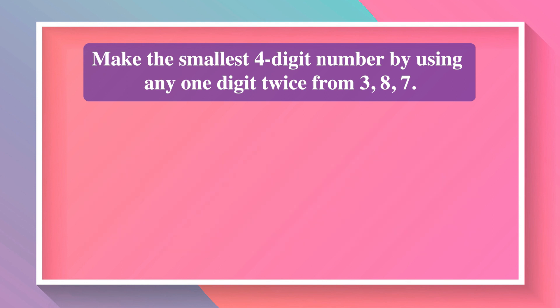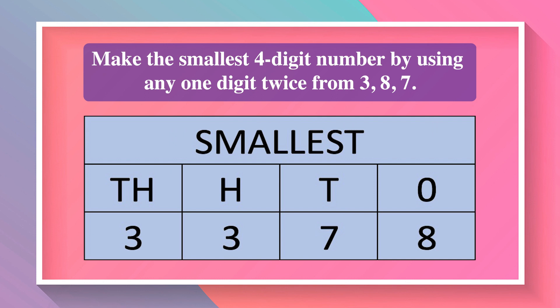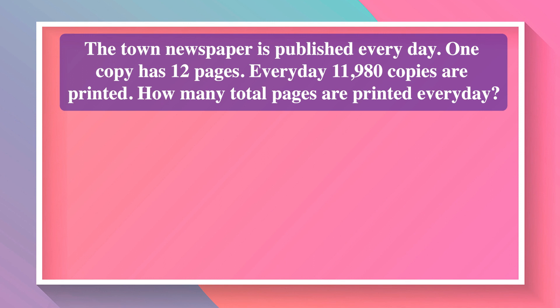Make the smallest 4-digit number by using any one digit twice from the digits 3, 8, 7. Only 3 digits are given and we have to make a 4-digit number. To make the smallest number, we repeat the smallest digit, which is 3. The smallest number is 3,378.